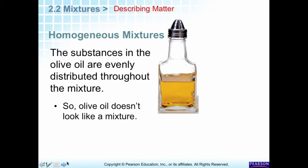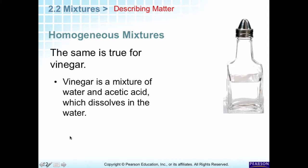The other type of mixture is homogeneous. A homogeneous mixture looks even throughout. Take olive oil — if you look at any part of it, it looks the same. There are no visible particles. It's a mixture because it contains oil from the olives plus flavorings from the olives. Vinegar is the same — it's water and acetic acid, about 5%. Homogeneous mixtures are uniform throughout.